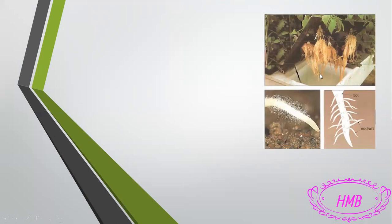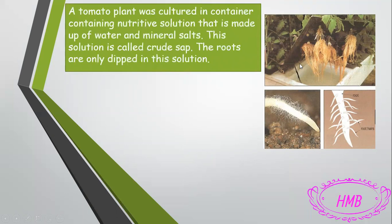In this picture we have a tomato plant, and we dipped the roots of this plant in a nutritive solution. So a tomato plant was cultured in a container containing a nutritive solution made up of water and mineral salts. This solution is called crude sap. The water with mineral salts are the essential needs of chlorophyllic plants, and the scientific name for this solution is the crude sap.